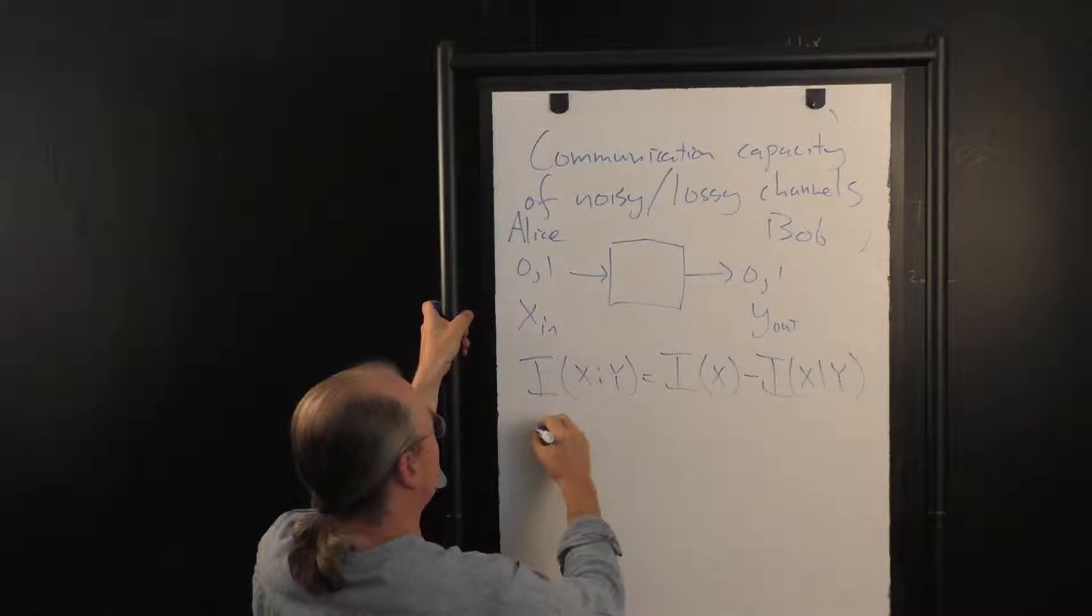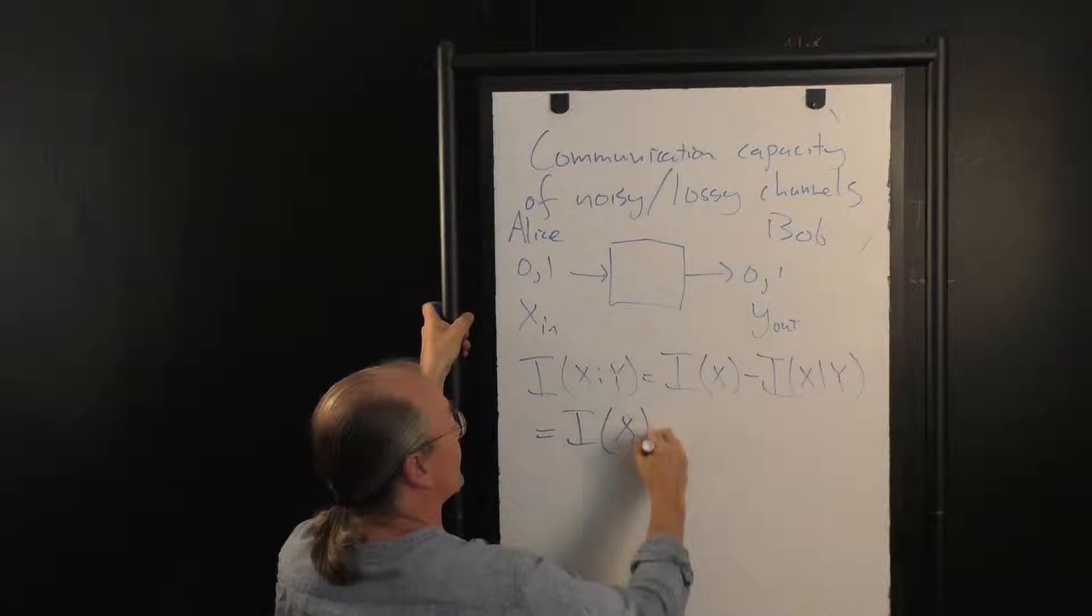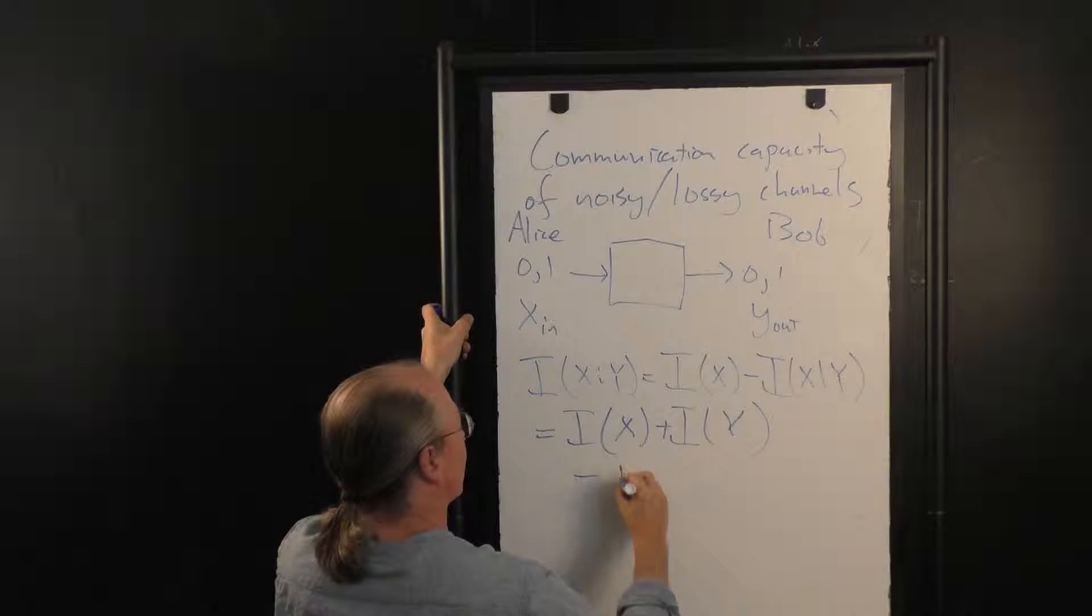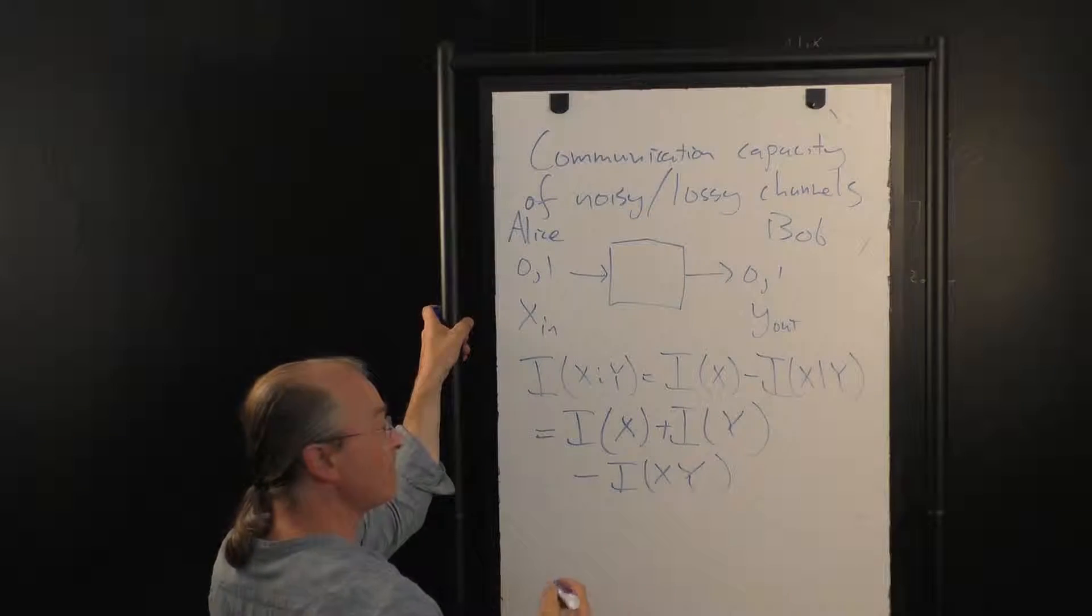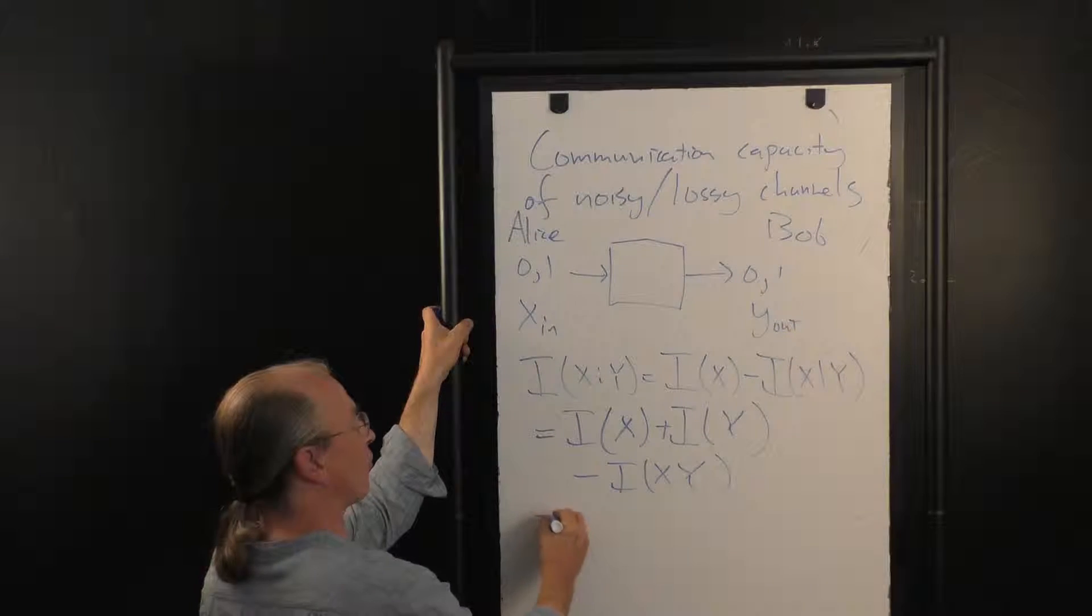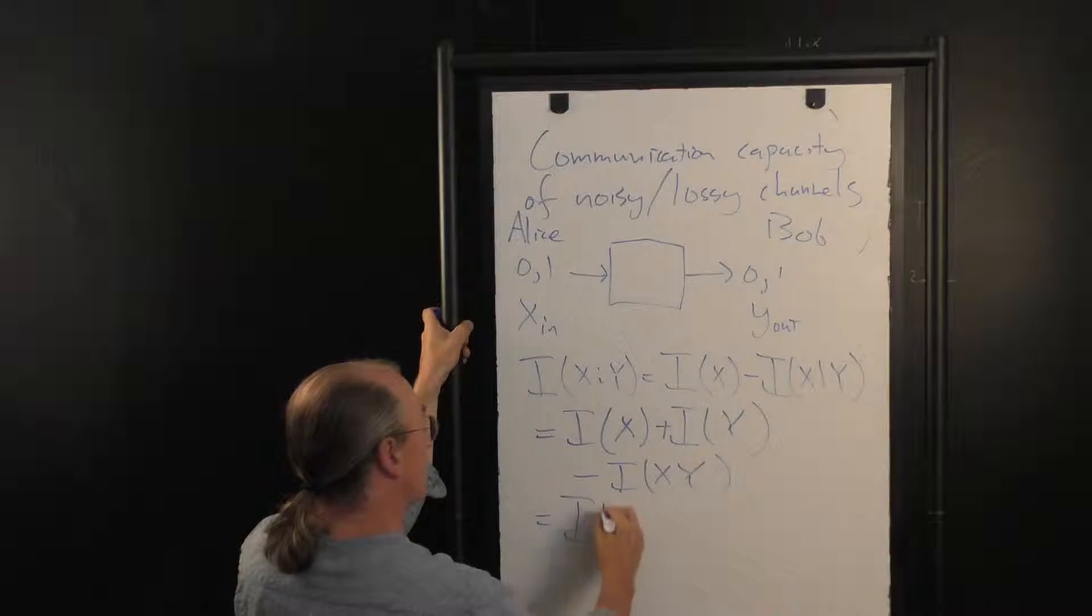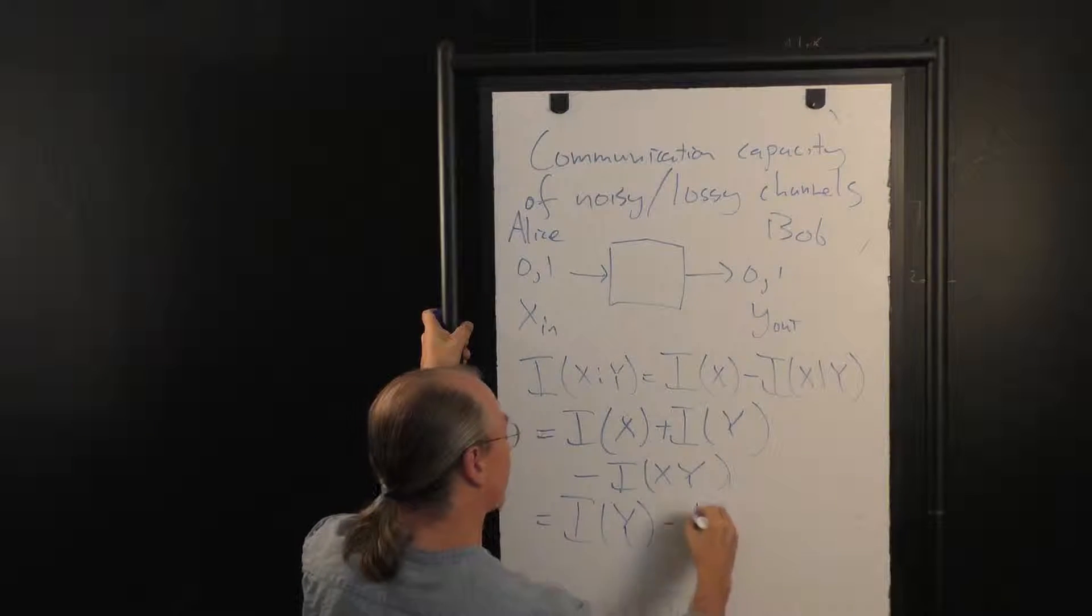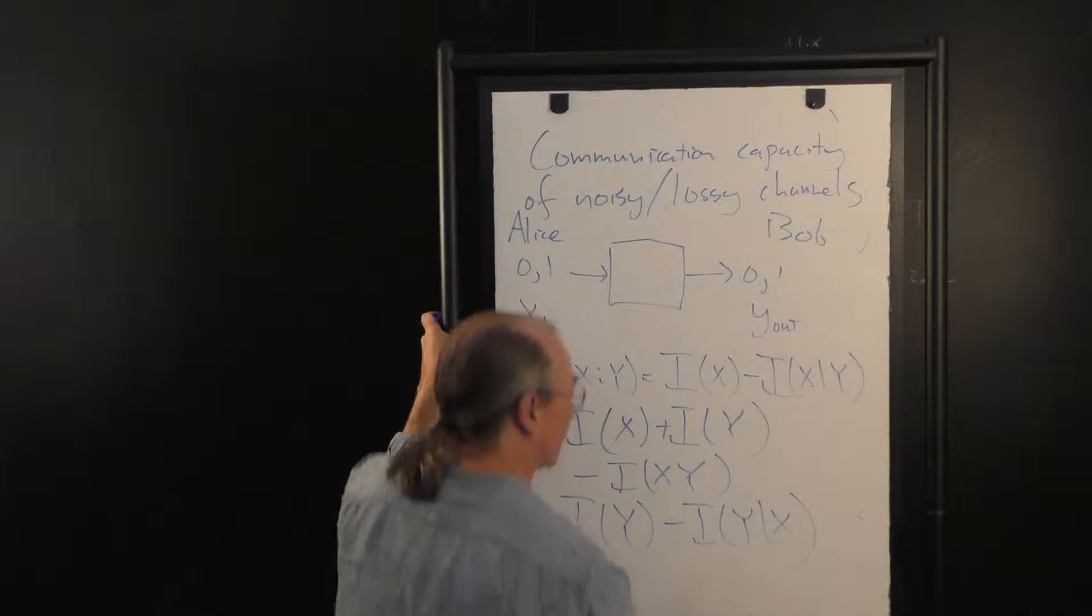Now actually, we also noted that this can be written as I(X), the input, the amount of information in the output, minus the joint amount of information in the input and the output, just because of our handy-dandy formulas about conditional information. And of course, because this is symmetric in X, Y, this is also equal to the information in the output minus the conditional information of the output given the input.